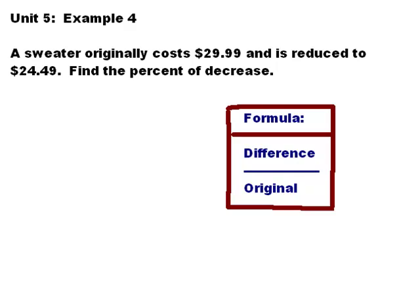We're in Unit 5 Example 4 and we're looking at percent of increase or percent of decrease. This problem has a sweater that originally cost $29.99 and it is reduced down to $24.99 and we want to find the percent of decrease.